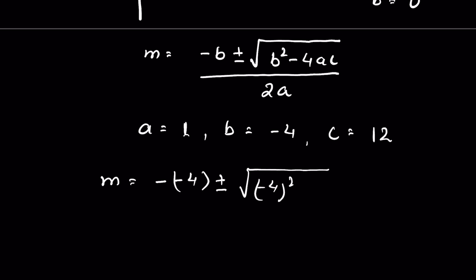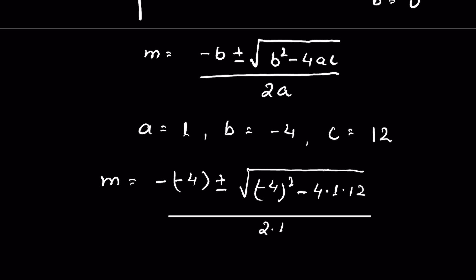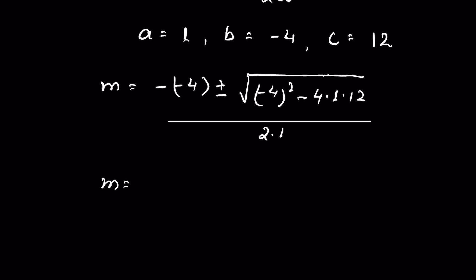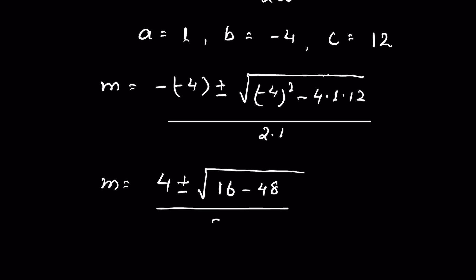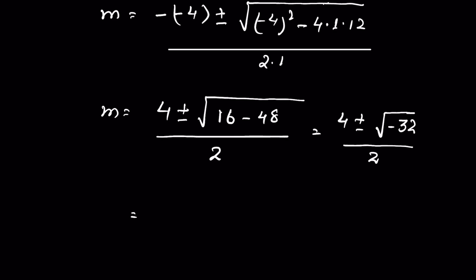Substituting, m equals negative (minus 4) plus or minus the square root of (minus 4) squared minus 4 times 1 times 12, all over 2 times 1. That gives 4 plus or minus the square root of 16 minus 48 over 2, which is 4 plus or minus the square root of minus 32 over 2.